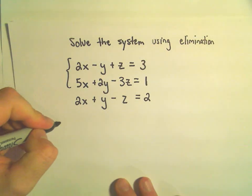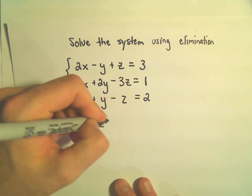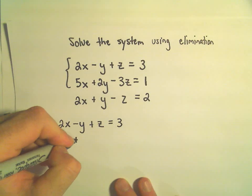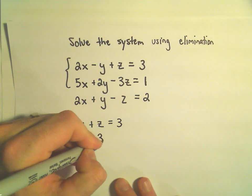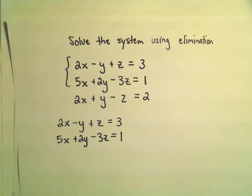I'm going to take the first equation and the second equation, 2x minus y plus z equals 3, we've got 5x plus 2y minus 3z equals 1. You can eliminate any variable you want.